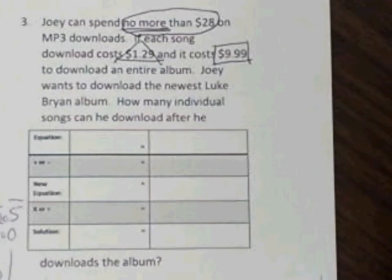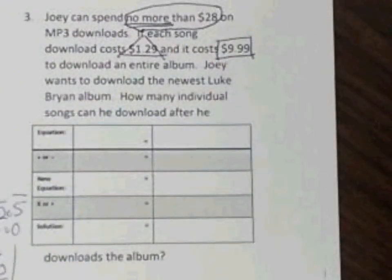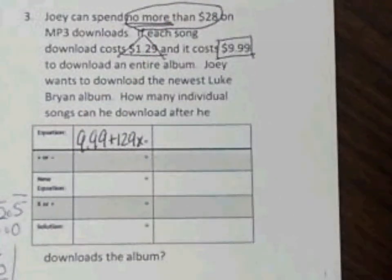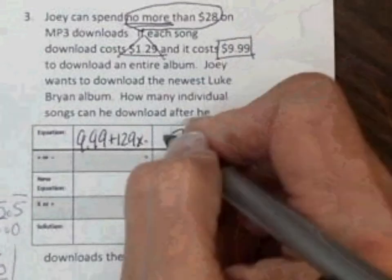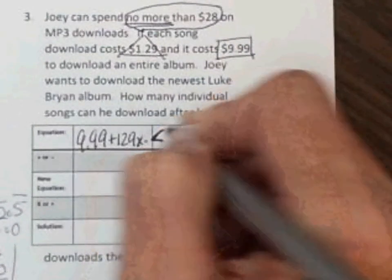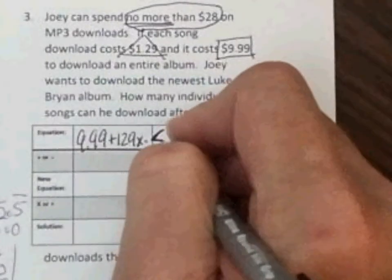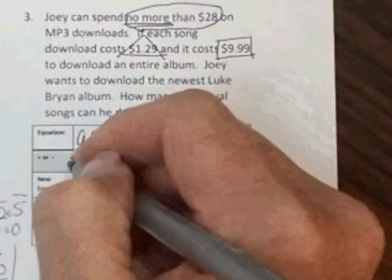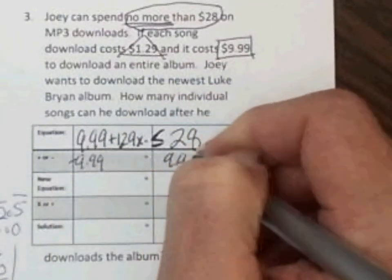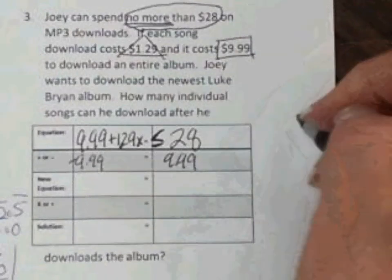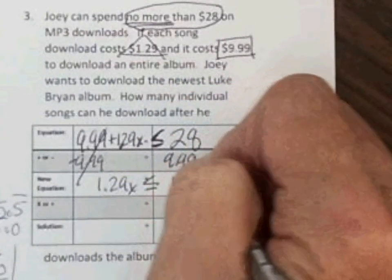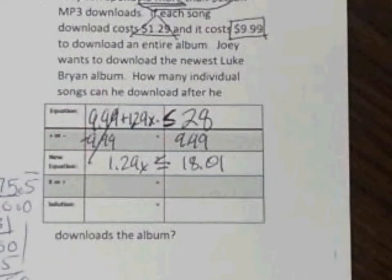Now that we have all our information marked in our word problem, we can write our inequality. We have $9.99 plus $1.29x, and we know our maximum is $28. We know that's our maximum, so we want it to be less than, but we can go exactly even to $28, so we put less than or equal to. Our first step: we want to get $1.29x by itself, so we're going to subtract $9.99 from both sides. Those are zero pairs. We have $1.29 left and $18.01. So $1.29x is less than or equal to $18.01.